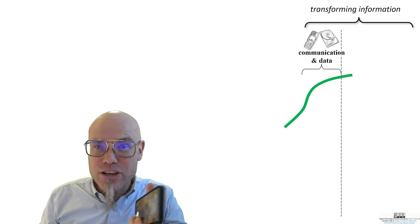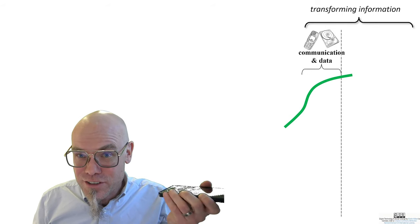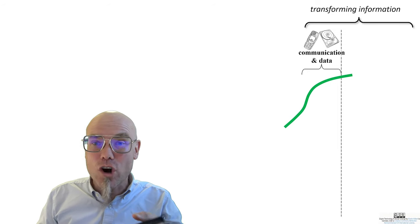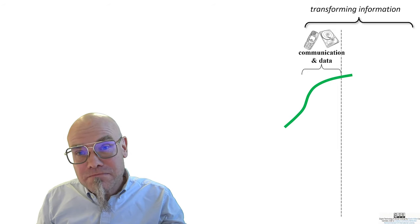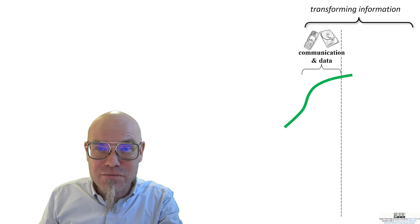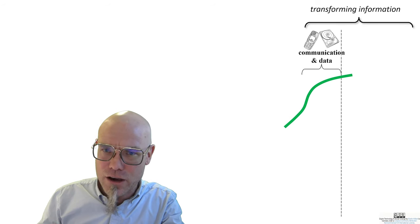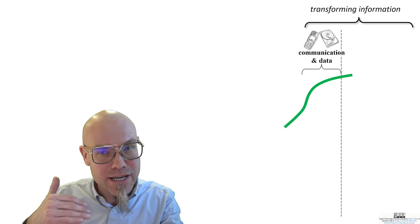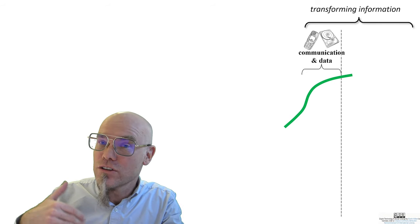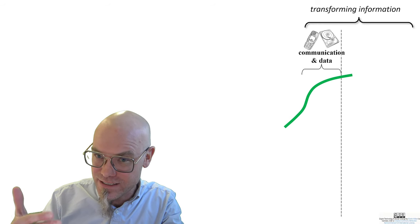Today, communication is traveling at the speed of light through radio waves and through fiber optic cables all around the globe. And according to Albert Einstein, the speed of light is the fastest information can travel — so basically, we've maxed that out quite a bit already. Not everybody is connected yet, the paradigm is still diffusing, and not all information is yet digitized and digitalized.